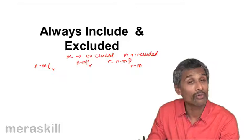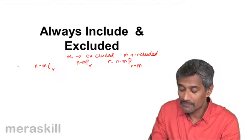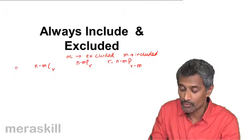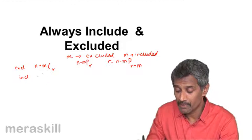That means R have to be chosen out of N minus M. And suppose M is—this is for always excluded. And suppose M will always be included.